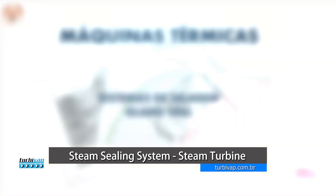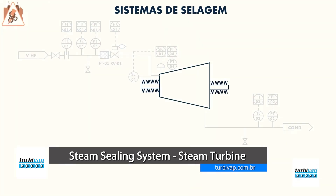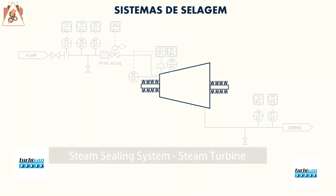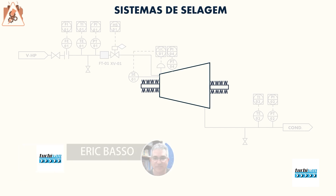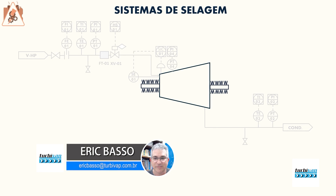Our turbine is composed of an inlet system and a steam outlet. For a condensing turbine, you will have superheated steam entering and steam exiting, exhausted at a lower than atmospheric pressure. The turbine can also be a back pressure turbine.